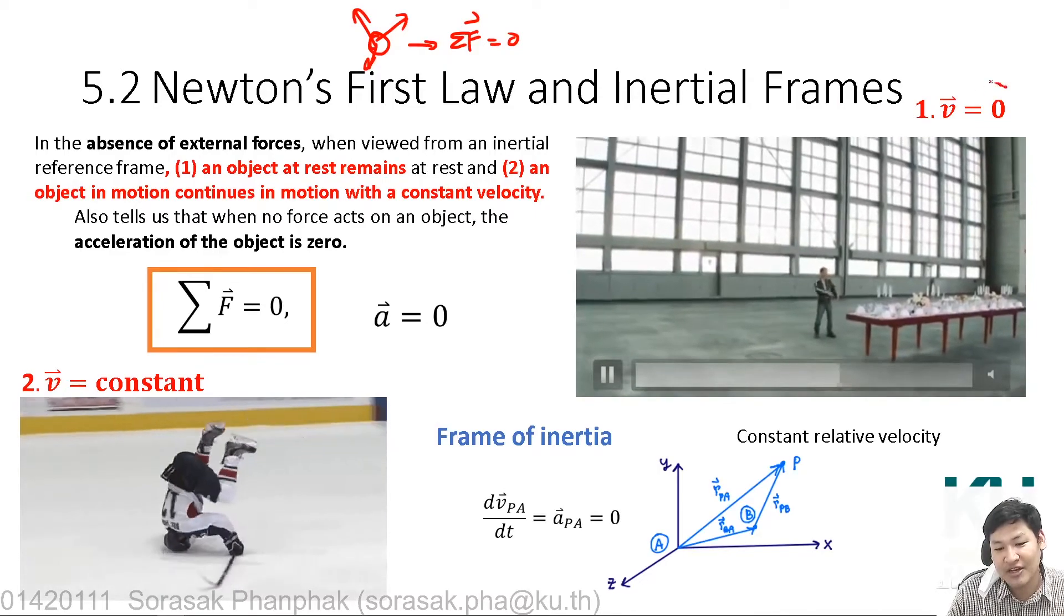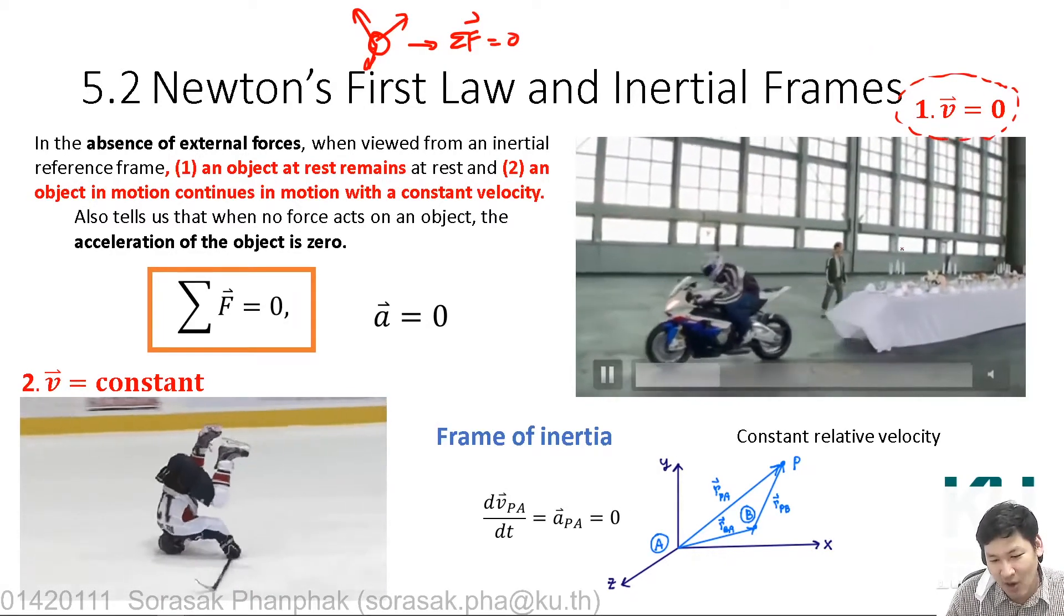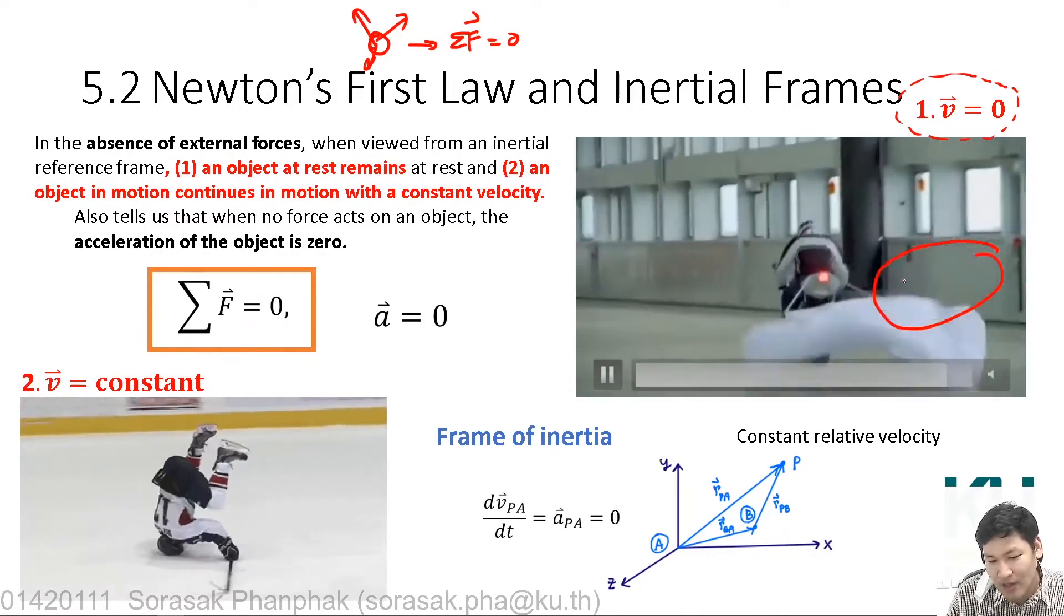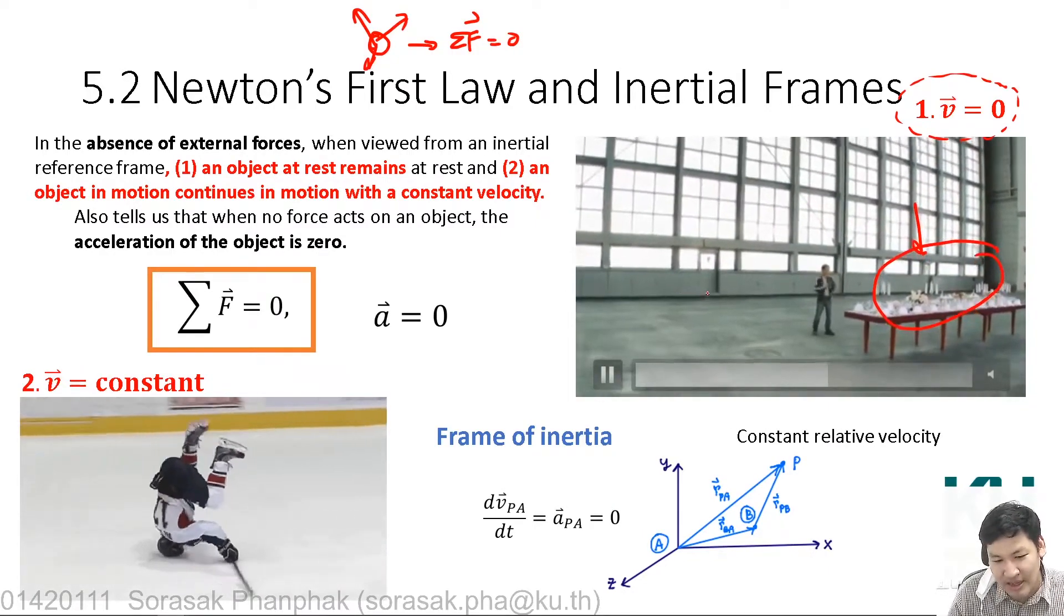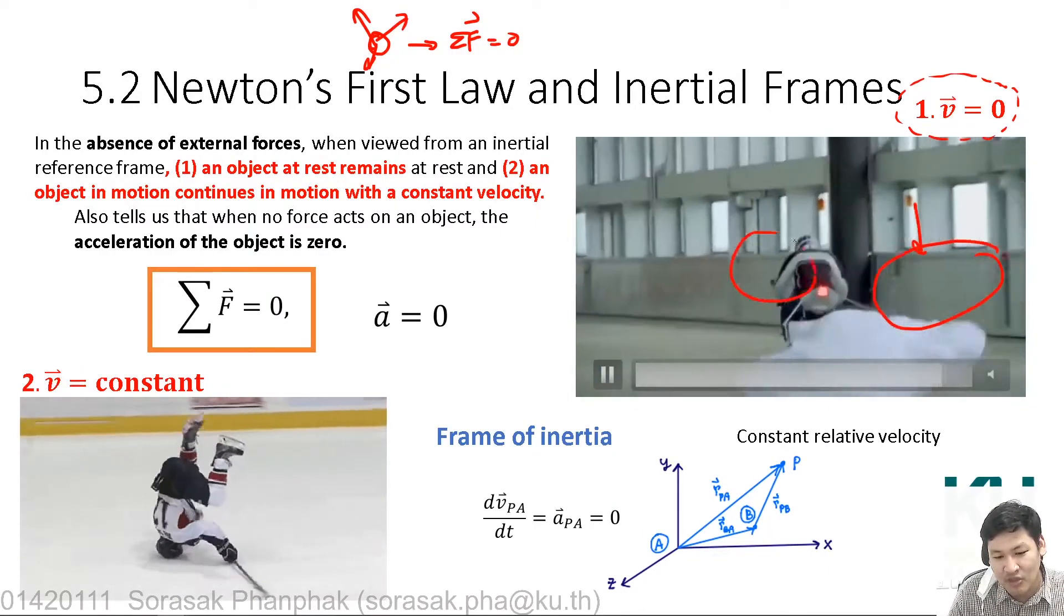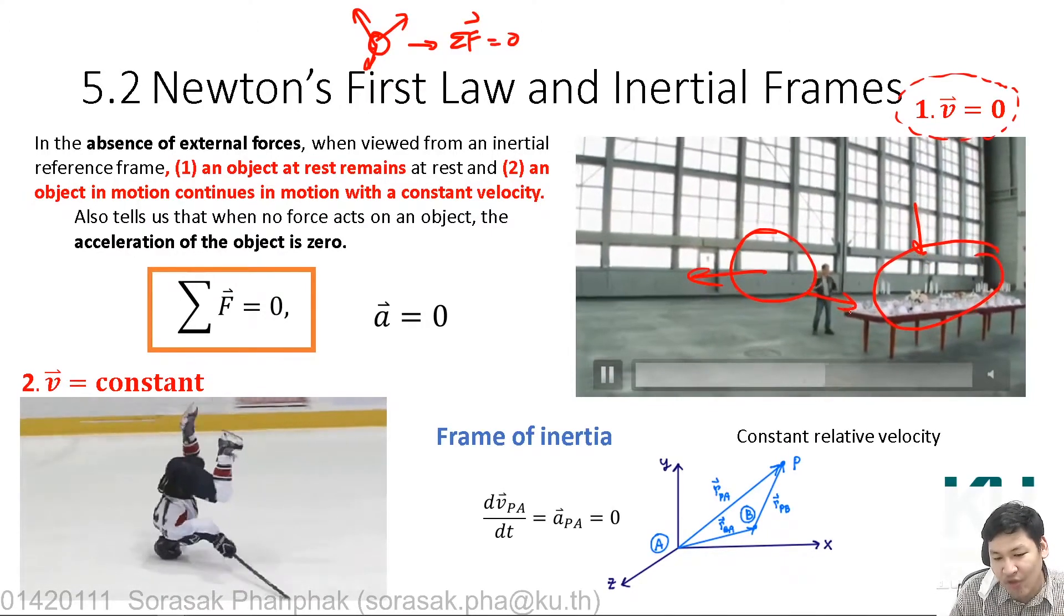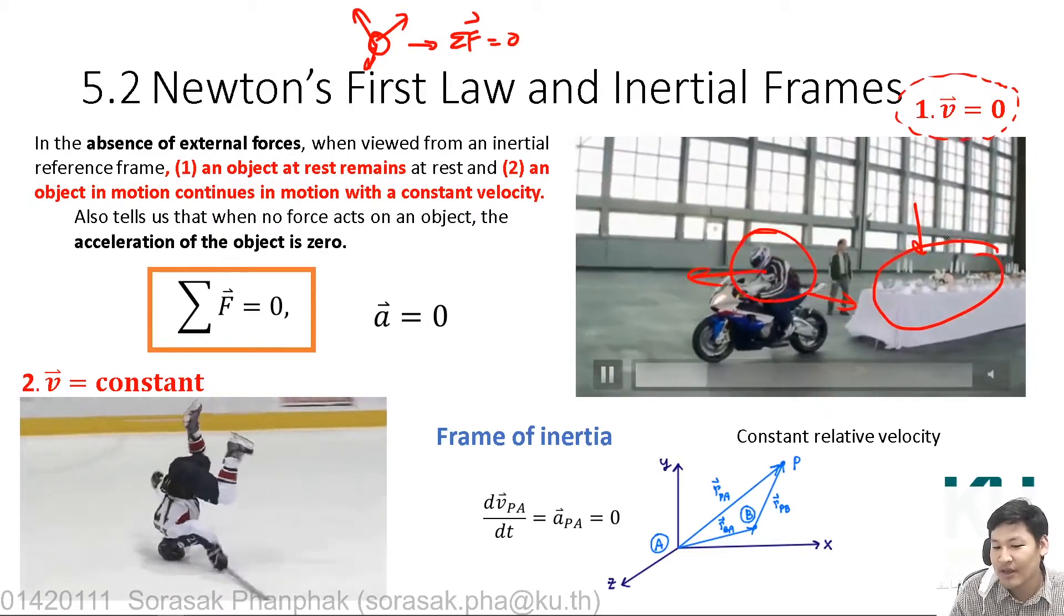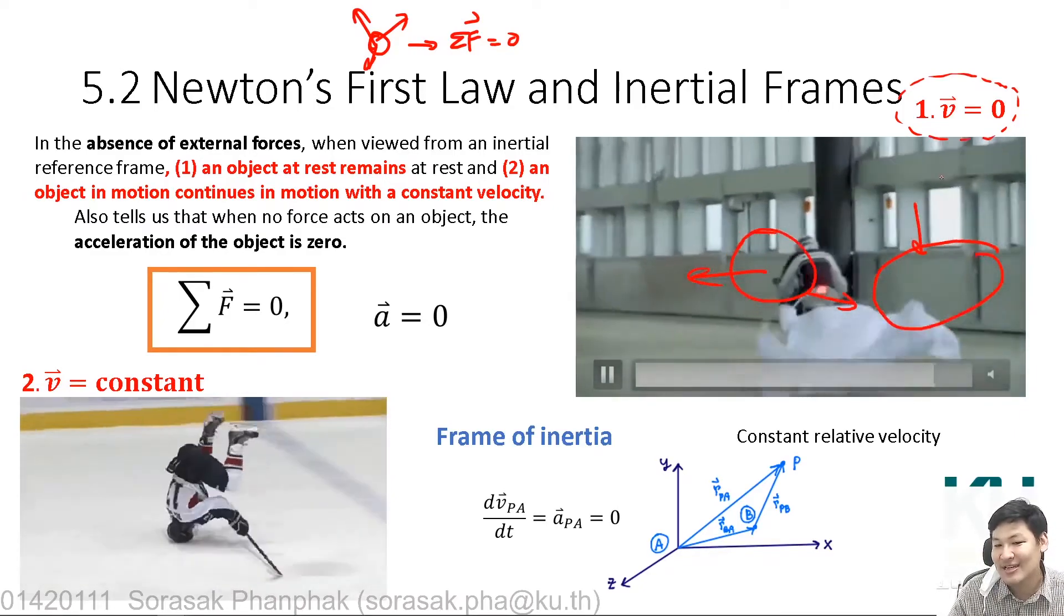The case where the system stays still. For example, if initially an object has velocity as zero, you can see all these - the cutlery, this plate, or even the candle stay still, even when the guy riding the motorbike tries to pull the cloth away. The cloth is moving, but these objects are not moving because all these plates stay still. If it stays still, it keeps staying still.